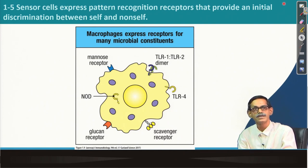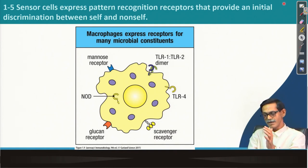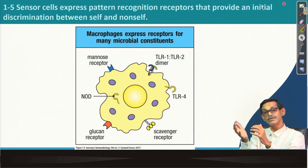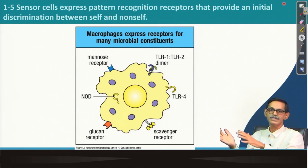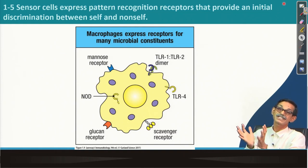How do sensor cells like macrophages and dendritic cells recognize what is foreign? They have pattern recognition receptors. Normally, most cells in our system have a lot of receptors on the surface, because cells need a lot of communication — cell to cell, or environment to cell — so they can understand what is going on outside and what to do next.